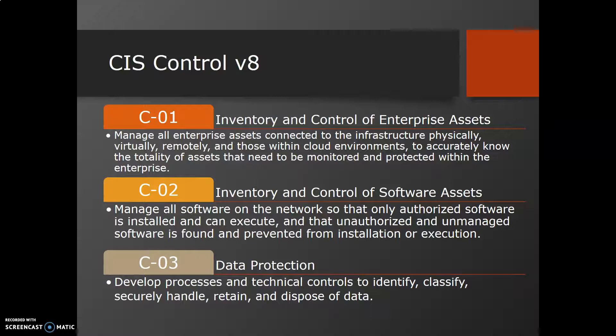The second control is Inventory and Control of Software Assets, which talks about managing all software on the network so that only authorized software is installed and can execute, and unauthorized or unmanaged software is found and prevented from installation and execution. Whatever software the company has authorized, we should have a list of it — authorized software can be whitelisted and others blacklisted.